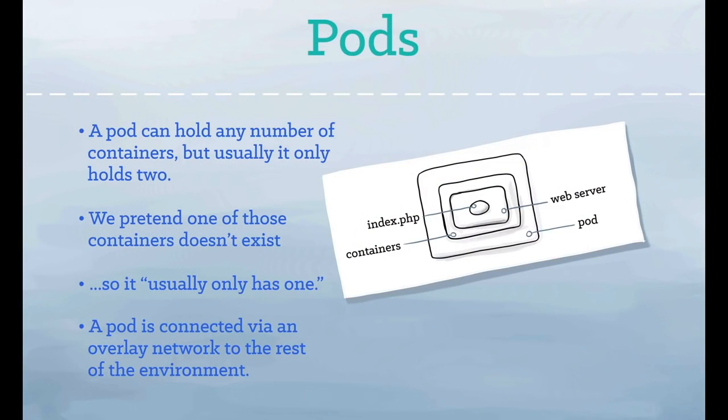In Kubernetes, a pod represents a runnable unit of work. Usually you will run a single container inside of a pod, but for cases where a few containers are tightly coupled, you may opt to run more than one container inside of the same pod. Kubernetes takes on the work of connecting your pod to the network and the rest of the Kubernetes ecosystem.